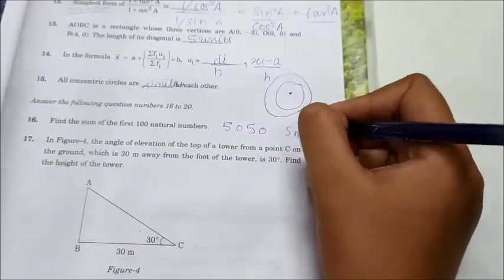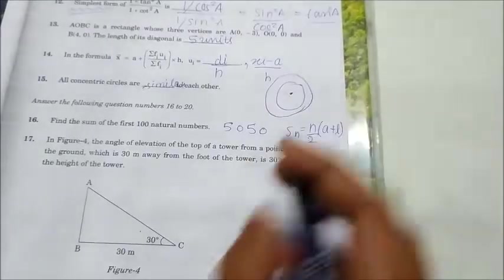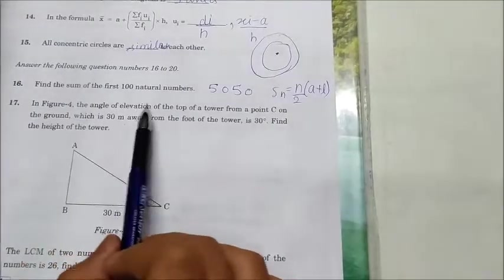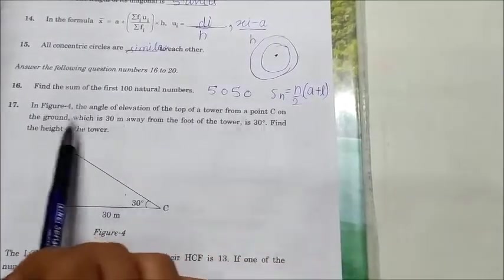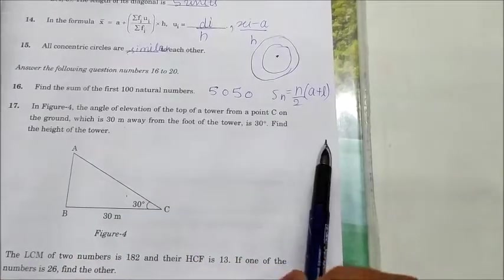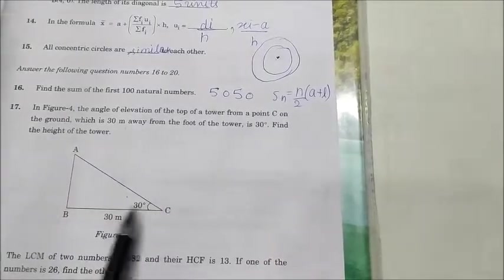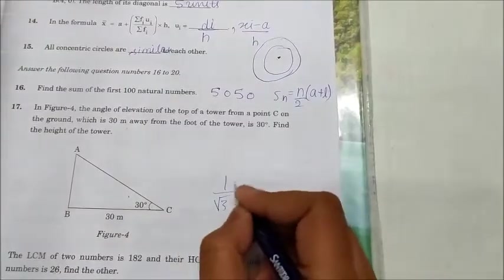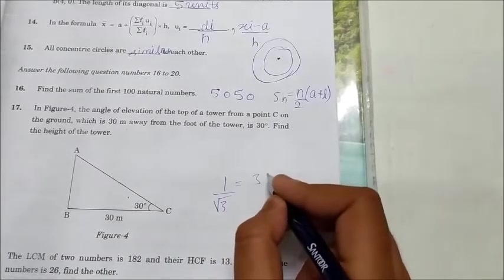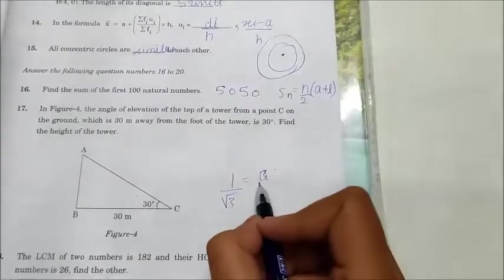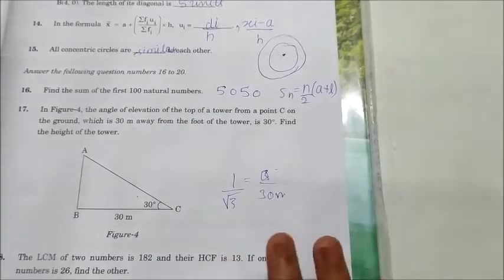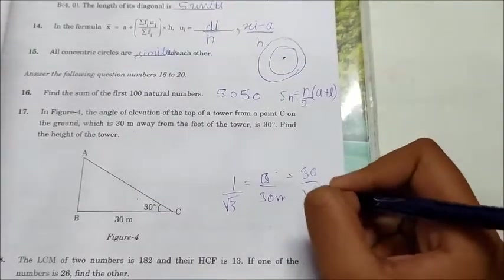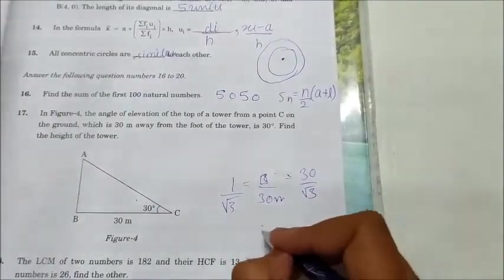In figure 4, question number 17: In figure 4, the angle of elevation of the top of a tower from a point C on the ground which is 30 meter away from the foot of the tower is 30°. Find the height of the tower. You will do tan 30, so you will get 1/√3 = h/30. a is 30 meters. If you want a proper explanation I am repeating you can go to the set 2 video. That will be 30/√3. When you will rationalize this you will get 10√3. The answer is 10√3 meter.